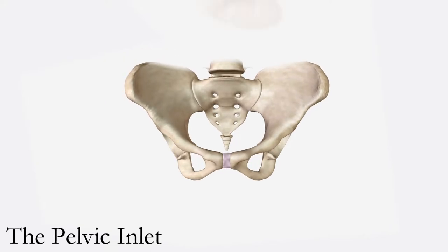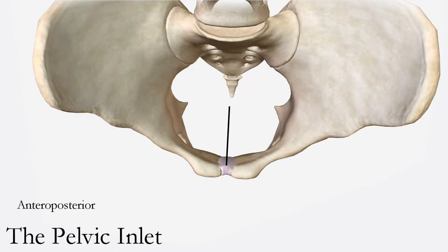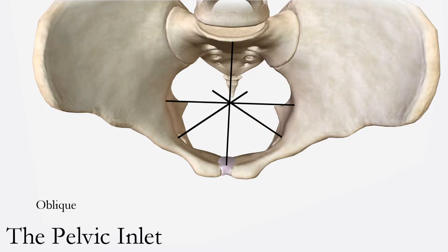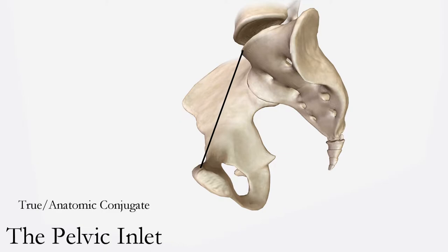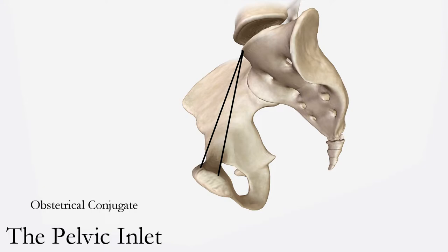The fetal head is in the transverse position upon entering this plane. The four diameters of the pelvic inlet include the anteroposterior, transverse, and two oblique diameters. The most cephalad of the anteroposterior diameters is the true conjugate, also called the anatomic conjugate, spanning from the uppermost margin of the symphysis pubis to the sacral promontory. Next is the obstetrical conjugate, the clinically significant anteroposterior diameter, with the shortest distance between the sacral promontory and symphysis pubis. It represents the actual space available to the fetus and normally measures 10 cm or more. However, it cannot be examined directly using fingers.